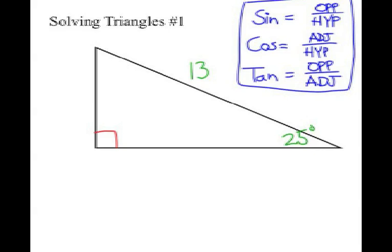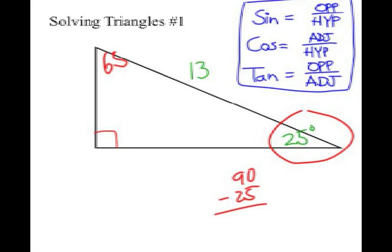So we're going to use the sine, cosine, or tangent function to find the missing sides, and know that the two acute angles of a triangle always add up to 90. So in this case, if one angle is 25, we know the other has to be complementary to that, which would be 65. So we've solved that part of the triangle so far.